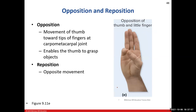Opposition of the thumb involves bringing the thumb toward the pinky finger — like a Boy Scout salute configuration. When the pinky and thumb approximate each other, that is opposition. Returning the thumb and pinky back to their original positions is called reposition.